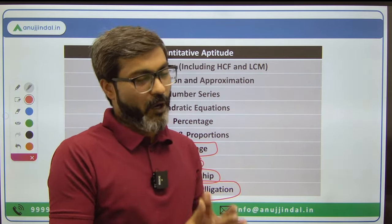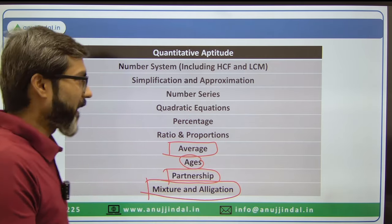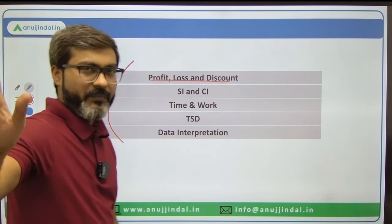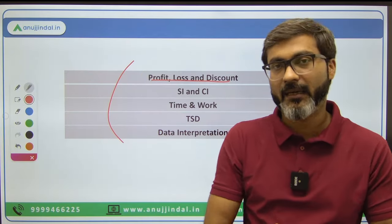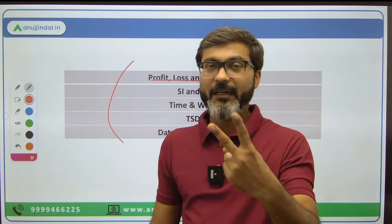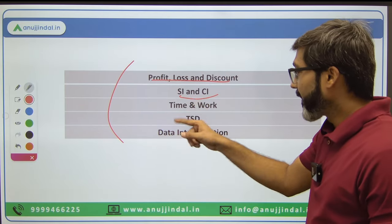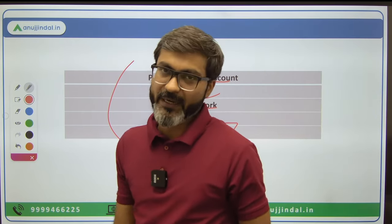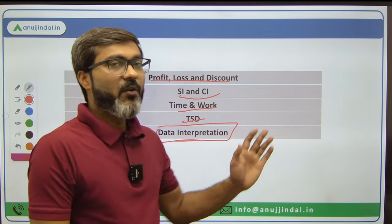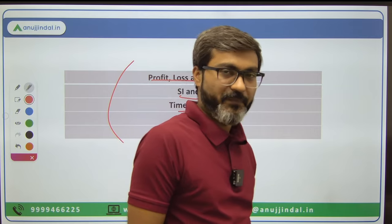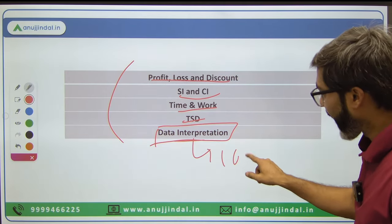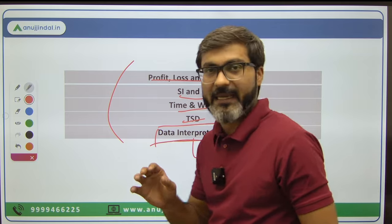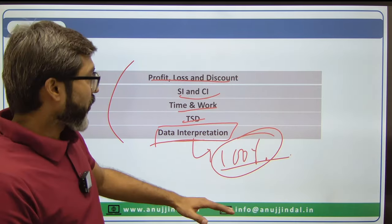The level of RBI Grade B Quant is high, and we need to tackle that — I will be making a separate video for that. Profit, Loss and Discount, and Simple Interest and Compound Interest are favorite topics of the RBI Grade B examiner. Time and Work, Time Speed and Distance are also important. Last but not least, Data Interpretation — 4 to 5 questions are definitely confirmed in your 2024 examination, so you can already count on those marks.